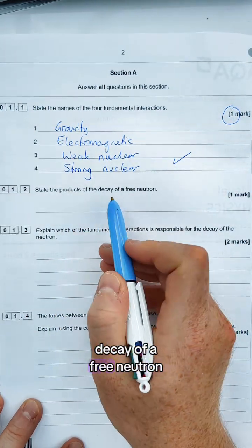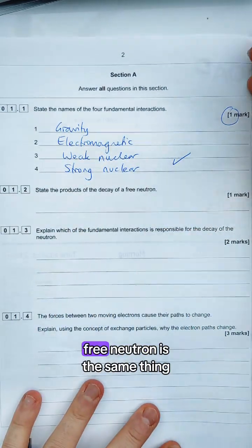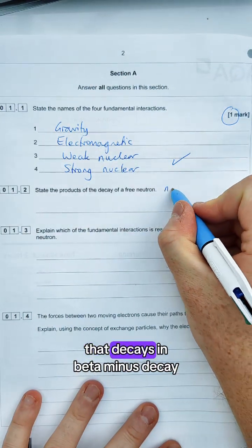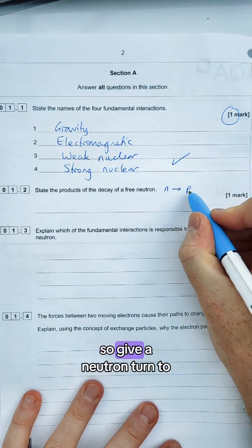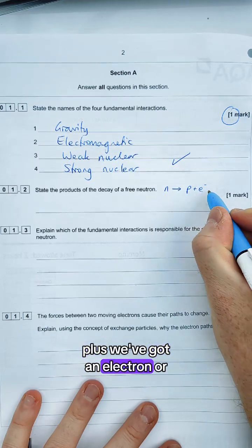Next we've got the products of decay of a free neutron. So if you don't know, free neutron is the same thing that decays in beta minus decay. So give a neutron turn to a proton, plus we've got an electron or beta particle...